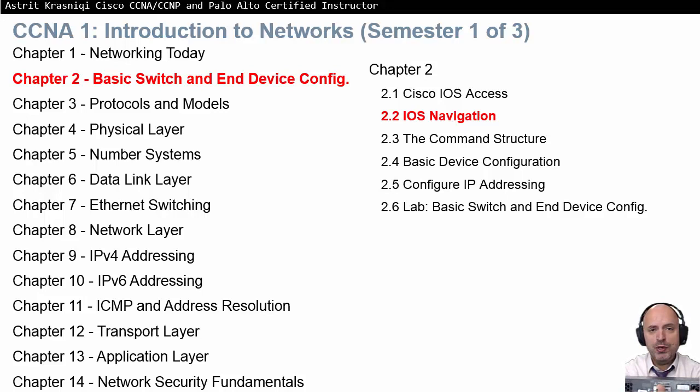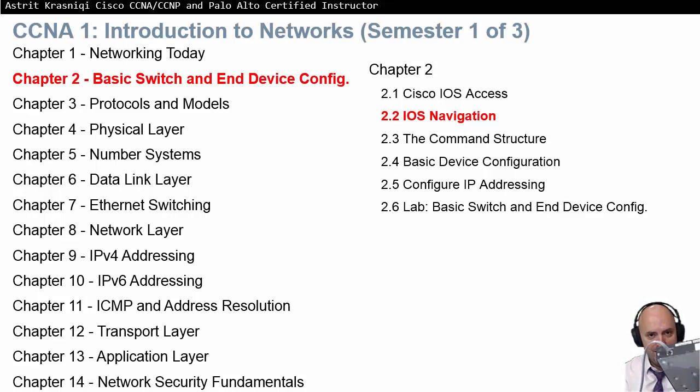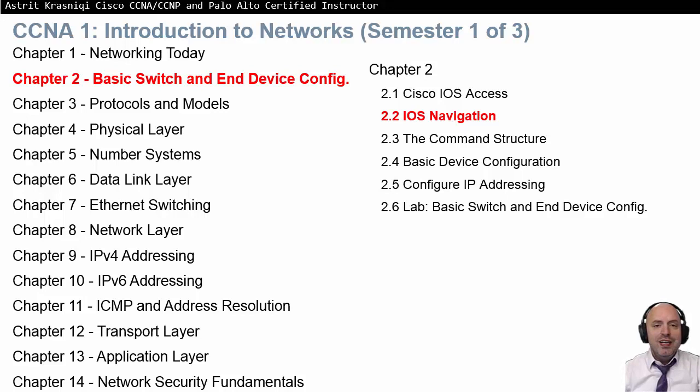The switch doesn't have on and off buttons — as soon as I plug it in, it will start. I'm going to use one of the newer console cables, which has one side RJ45 and the other side USB. I'll connect the RJ45 side to the console port, and the USB side to the USB port on the PC. There we go — we have a connection now.